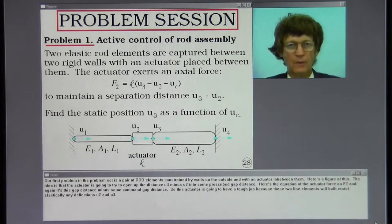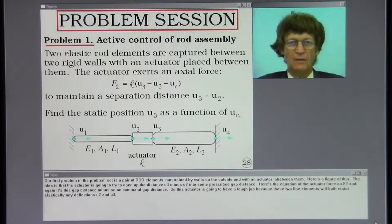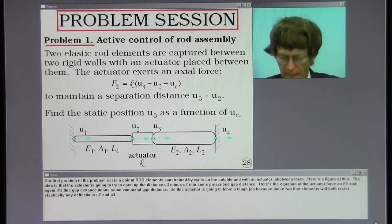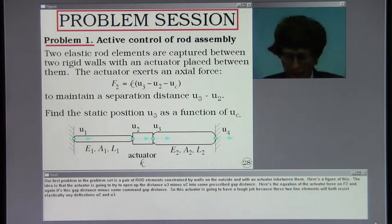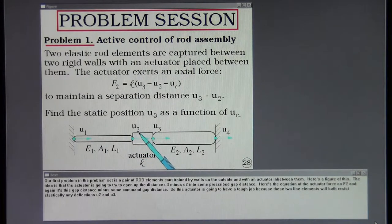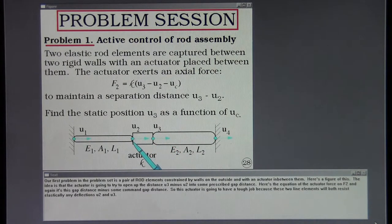Our first problem in the problem set is a pair of rod elements constrained by walls on the outside and with an actuator in between them. Here's a figure of this. The idea is that the actuator is going to try to open up the distance U3 minus U2 into some prescribed gap distance.